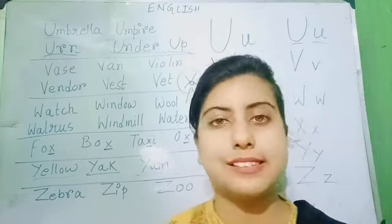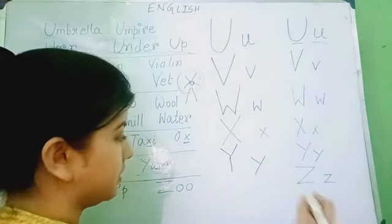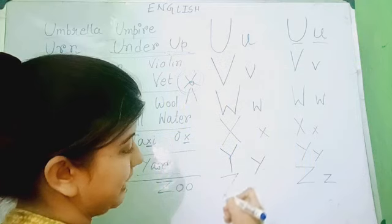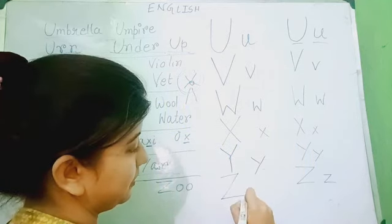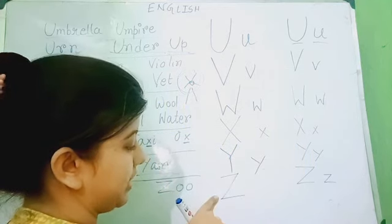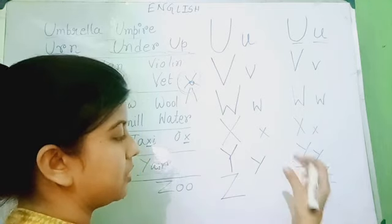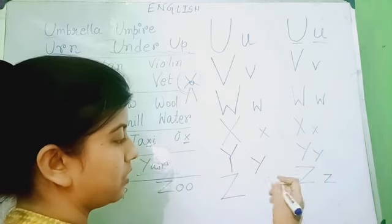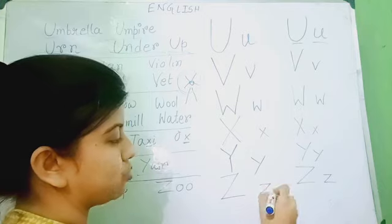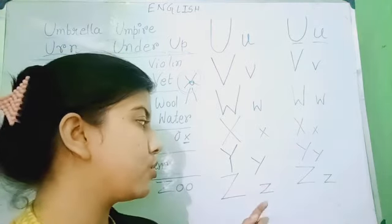Next, we have Z. How to write Z? Straight line, slanting line, straight line. This is capital Z. Small z is just like this but smaller — straight line, slanting line, straight line. This is small z.